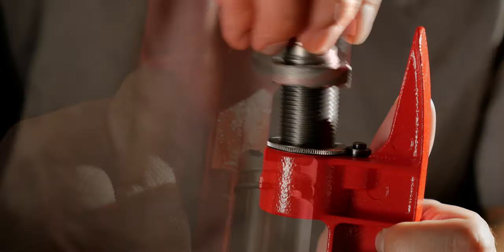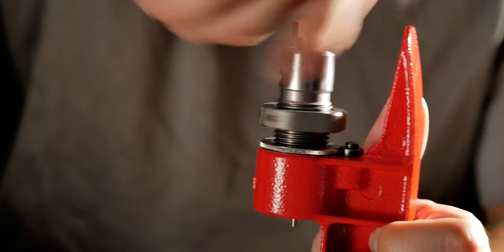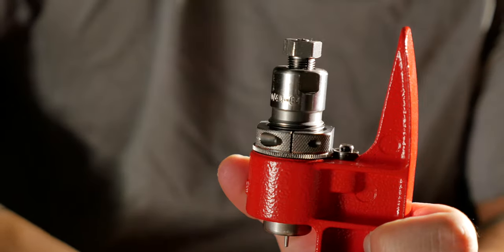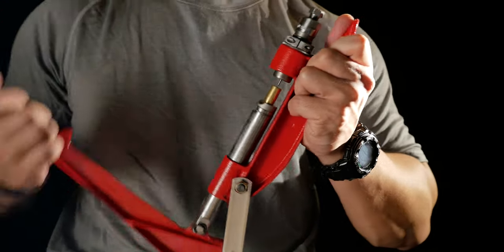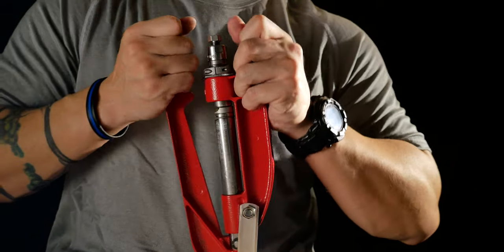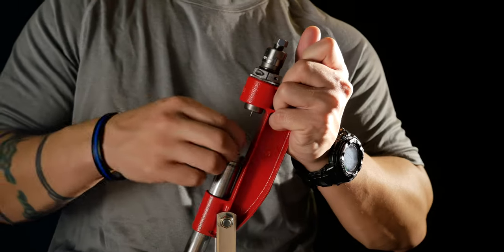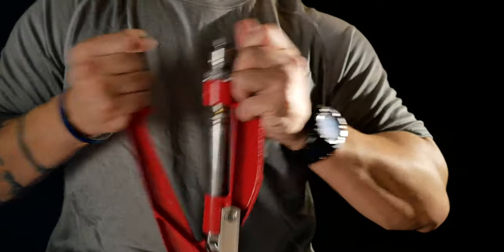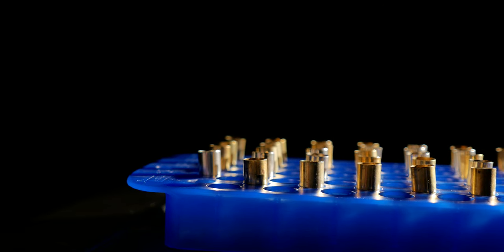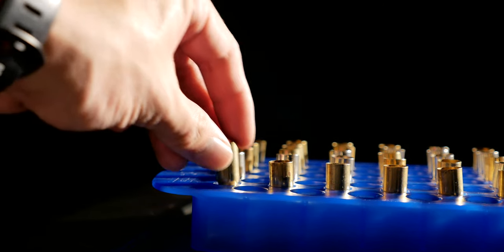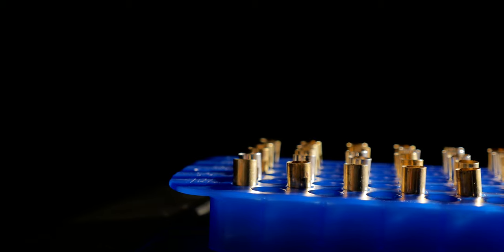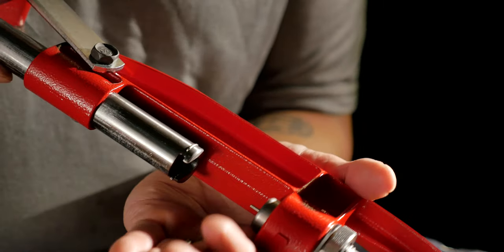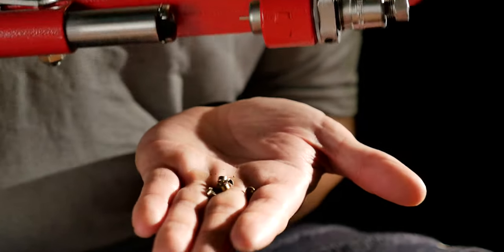We're gonna size and deprime first. The primers collect inside of the hollow piston which does make it a little bit dirty in there after a while, and you'll have to empty it every 40 to 50 rounds depending on the size primer you have.